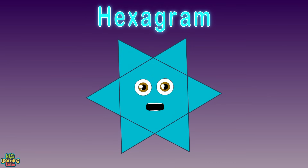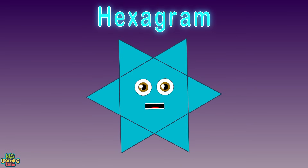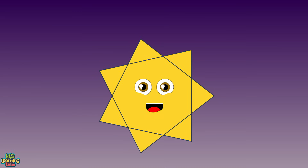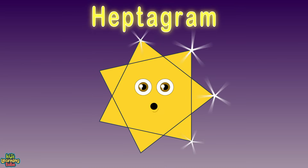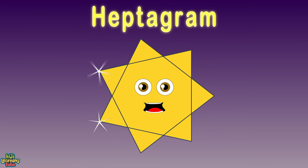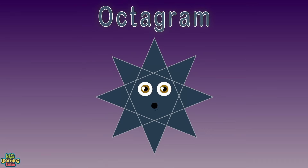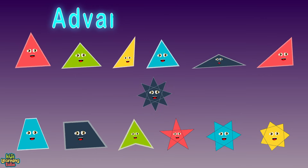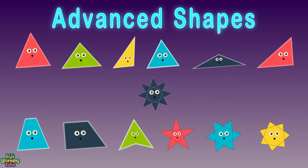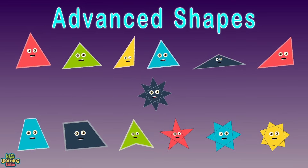I'm a hexagram and you will learn this for sure — I'm a six-pointed geometric star figure. I am an advanced shape; my name is heptagram. I'm a seven-point star drawn with seven straight strokes. My name is octagram — I am an eight-angled star polygon.